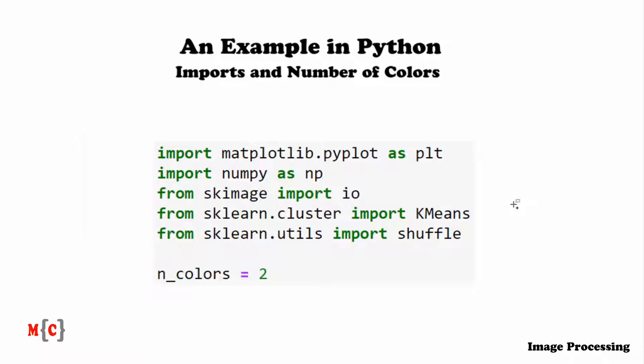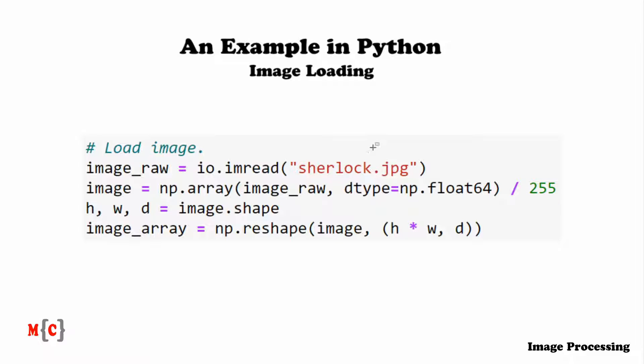Let's now load the image that we've seen before, which is called Sherlock because it originates from an original Sherlock movie. So we read this, and the values of image_raw are all going to be between 0 and 255. We want to make the computation a bit easier. We're going to parse this to a numpy array, and we're going to divide the values by 255 to end up with a matrix that has values between 0 and 1.